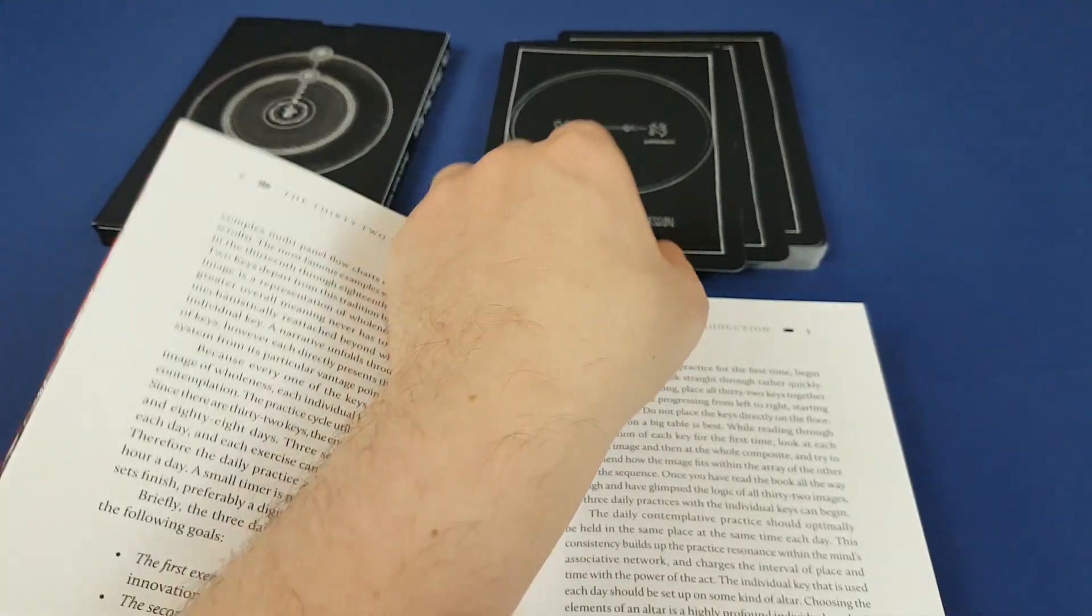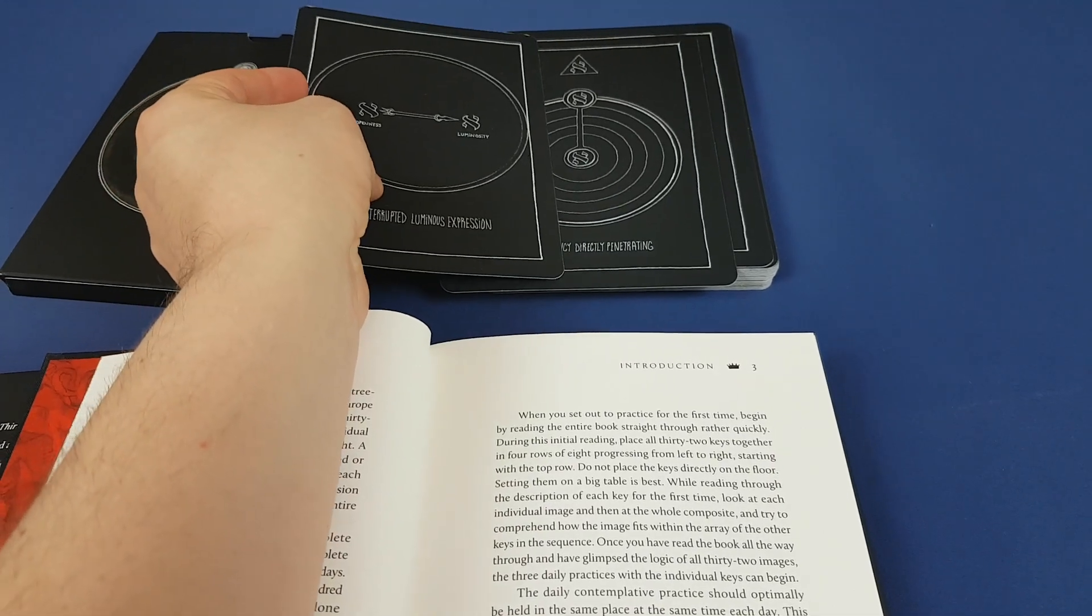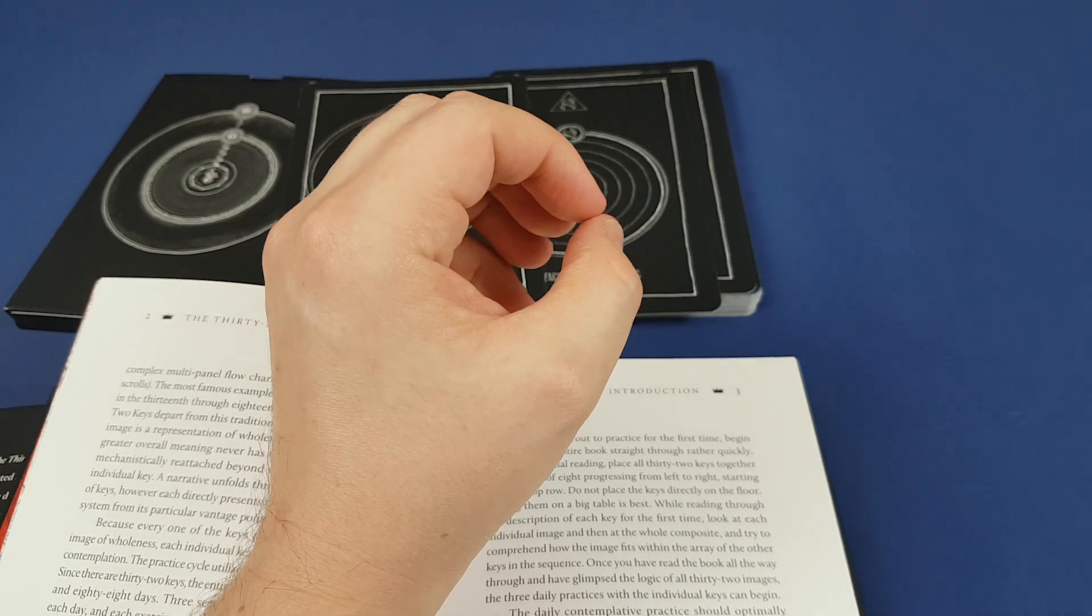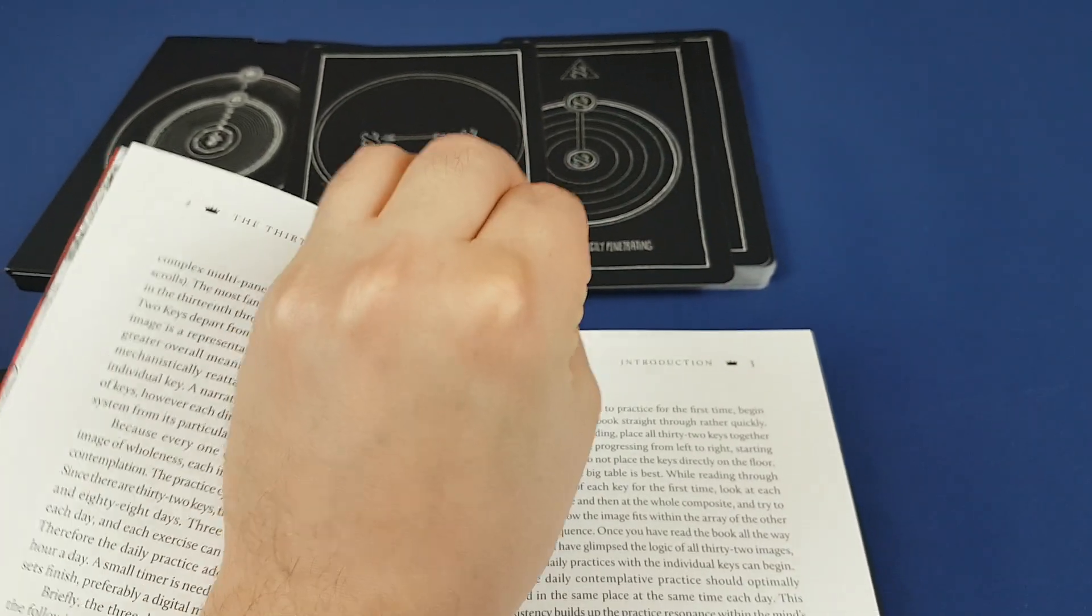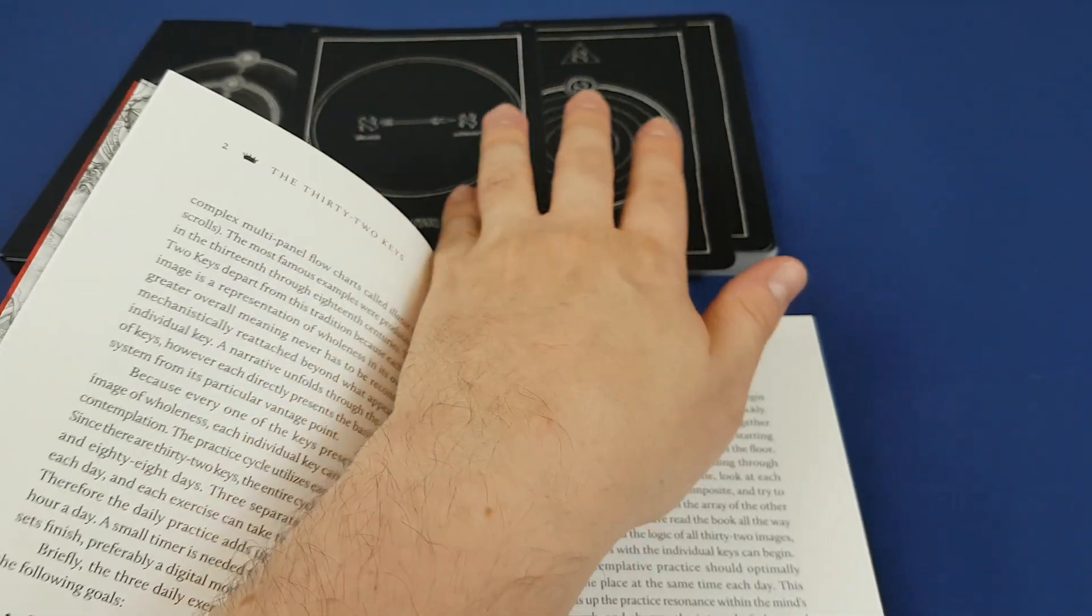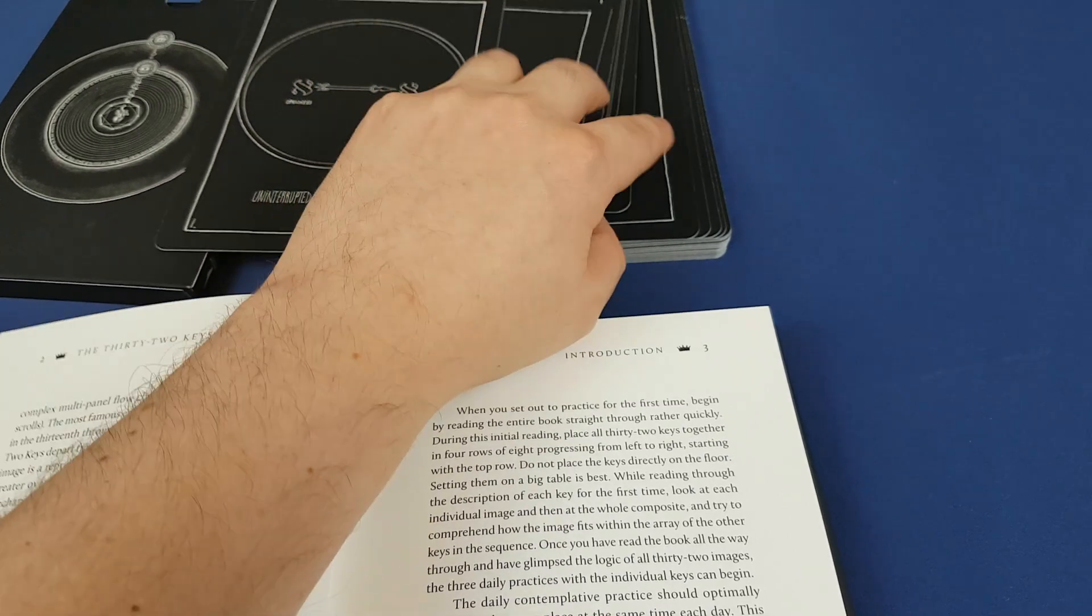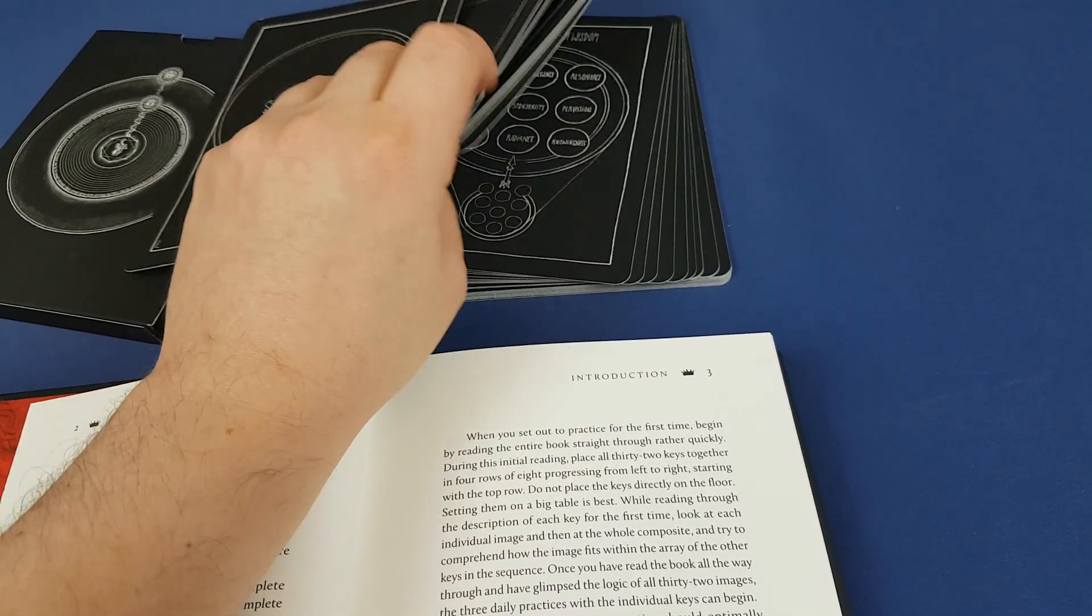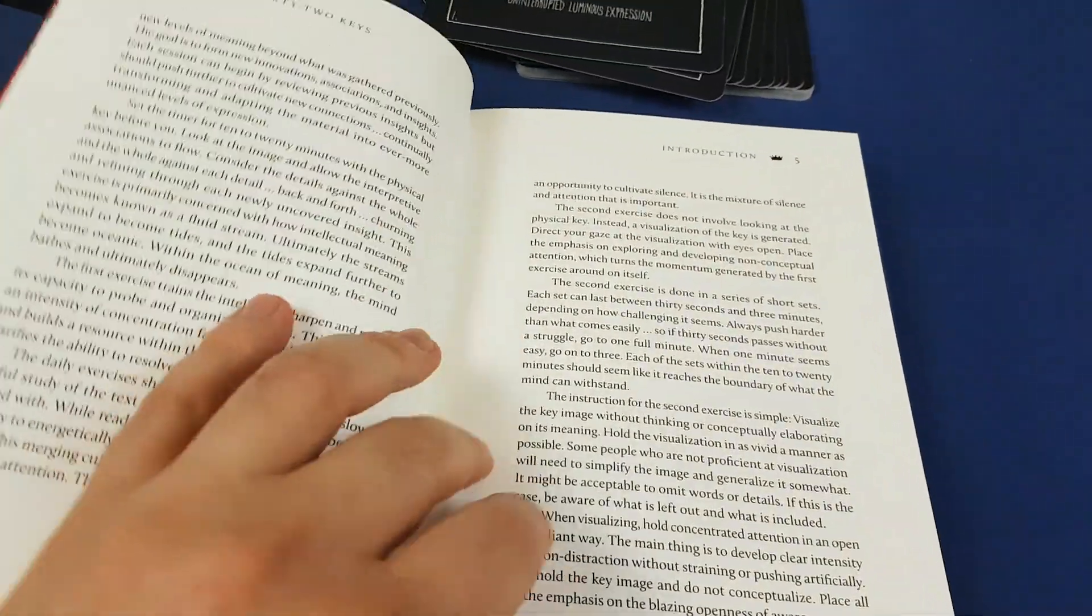So what he says is that these are not like the tree of life, where the tree of life just shows one aspect of Kabbalah in each one. He says that in here, each card represents the whole. Each card, in fact, you could look at one card and get the full picture. So that's an interesting concept.